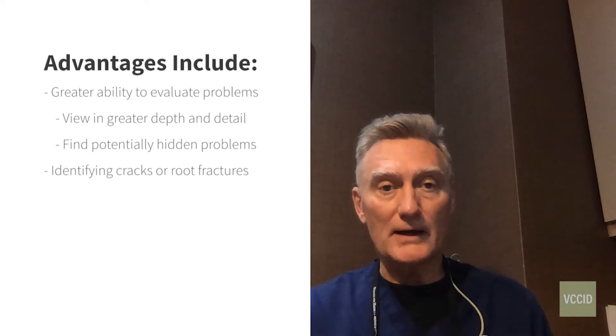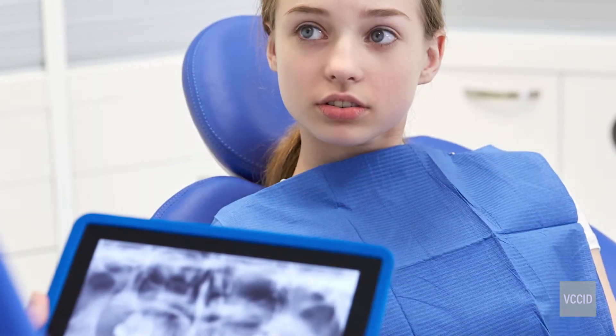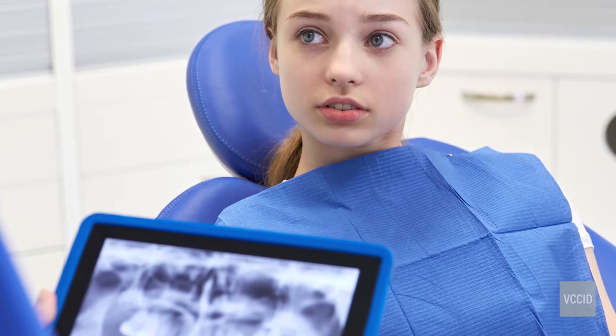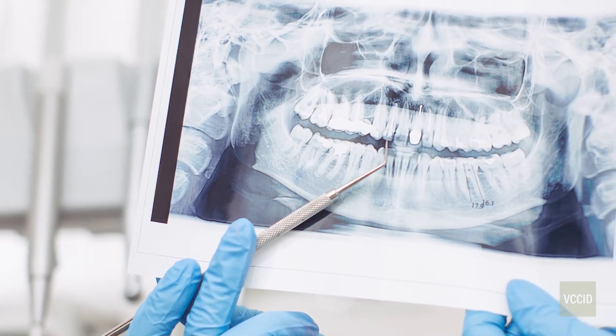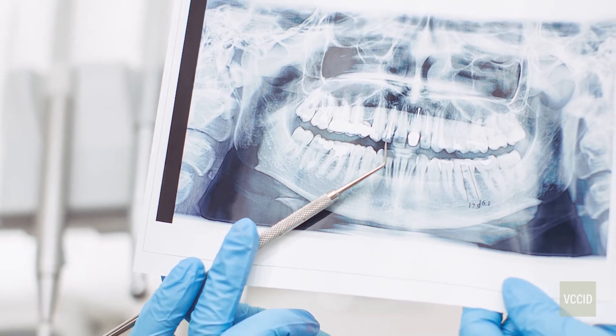Teeth that sometimes have cracks or root fractures we can identify, and just so many other things. Mainly today I want to talk about how it relates to implant dentistry. For many years with implant dentistry we had traditional films — a two-dimensional film gave us some idea of bone volume, but most all we could measure was height. We couldn't measure width from cheek to outside, and we couldn't measure angulation. It was very limited, and sometimes the tissue could be quite thick while the bone was quite thin.